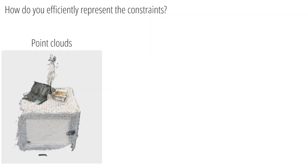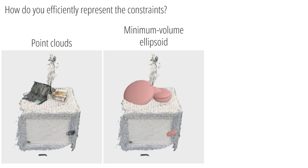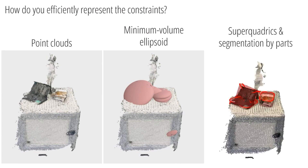We highlight that the constraints are directly extracted from real-world point cloud data. Instead of relying on an ellipsoidal fit of the point clouds, we use less conservative superquadrics in combination with segmentation by parts. In the case of a laptop, this allows us to fit two superquadrics to get an even tighter approximation.